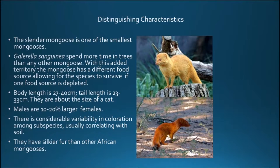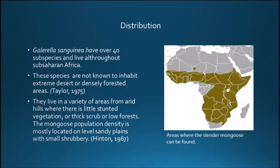They have thicker fur than other African mongooses. This particular species has over 40 subspecies and lives throughout sub-Saharan Africa. These species are not known to inhabit extreme deserts or densely forested areas, living instead in a variety of areas from arid hills with little stunted vegetation to thick shrub or low forest.